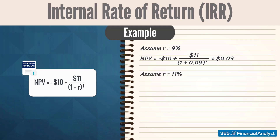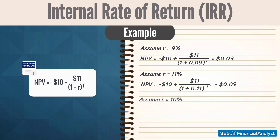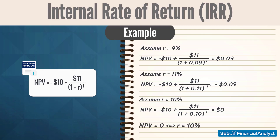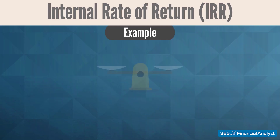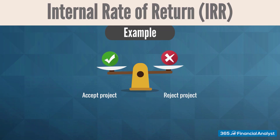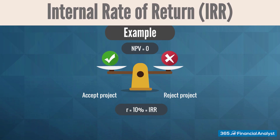How about 11%? This makes for an NPV of minus 9 cents. Let's try with 10%. This results in a net present value of $0. This trial and error procedure tells us that the NPV of the project is zero when the discount rate R equals 10%. In other words, if the actual discount rate is 10%, the investment is economically a break-even proposition because it doesn't create or destroy value. That's why we are indifferent between taking or abandoning this opportunity when its NPV is zero. We say that 10% is the project's internal rate of return.